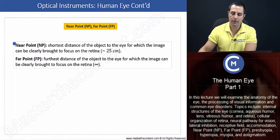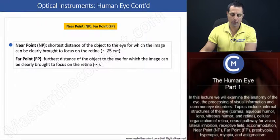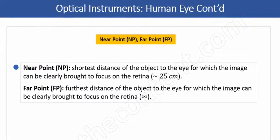We'll begin here with a few definitions, that being for the near point and the far point. Let's begin here with the near point. The near point is the shortest distance of the object to the eye for which the image can be clearly brought to focus on the retina.